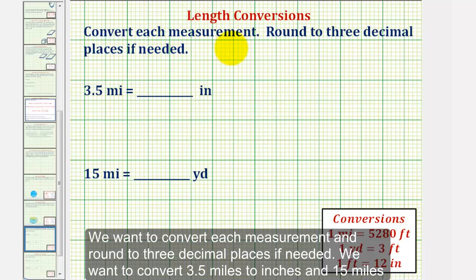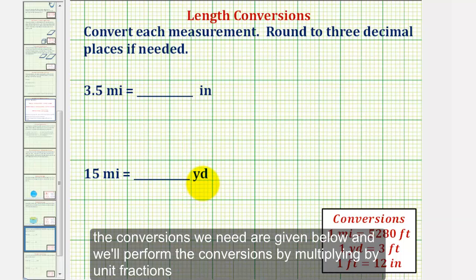We want to convert each measurement and round to three decimal places if needed. We want to convert 3.5 miles to inches and 15 miles to yards. The conversions we need are given below, and we'll perform the conversions by multiplying by unit fractions.